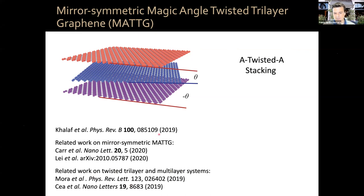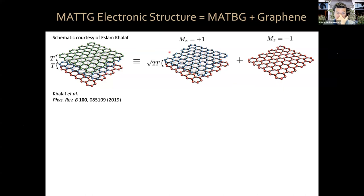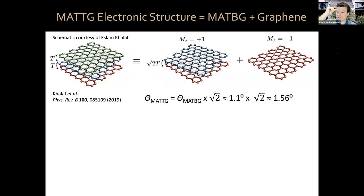The system has a very interesting electronic structure. If you think about these three layers with interlayer tunneling T between each successive pair, it turns out the Hamiltonian can be block-diagonalized into two blocks: one block is magic angle twisted bilayer graphene-like with √2 × T effective interlayer tunneling, and another block is just monolayer graphene. This means the magic angle for twisted trilayer graphene is that of bilayer graphene times √2 — so 1.1 × √2 ≈ 1.56 degrees. The moiré wavelength is correspondingly shorter: 9 nanometers instead of 13 nanometers.